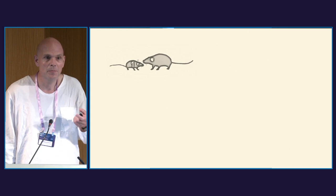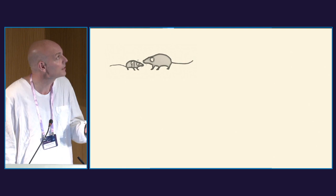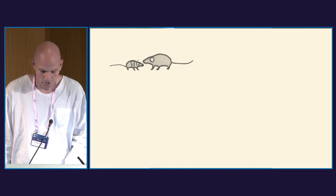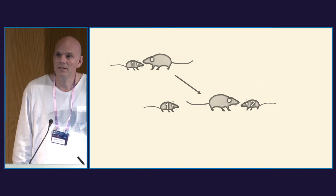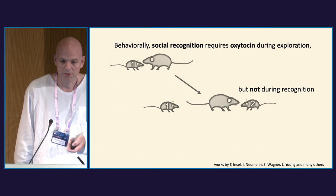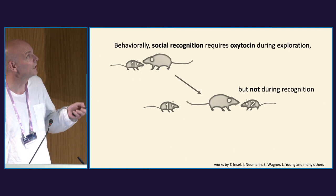We're dealing with a very simple behavior that has been extensively used in behavioral neuroscience over many decades: one mouse meets another rodent, and then it should remember it. When it encounters it again, there is a behavioral tendency — if you know an animal, you will explore it less. We also know that this behavioral social recognition requires oxytocin during exploration, but not during the later recognition.